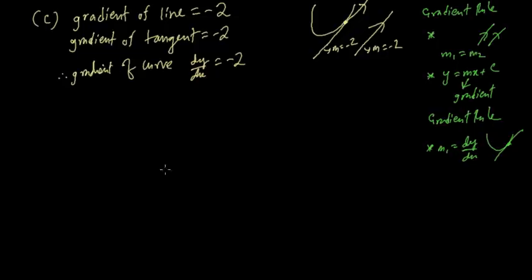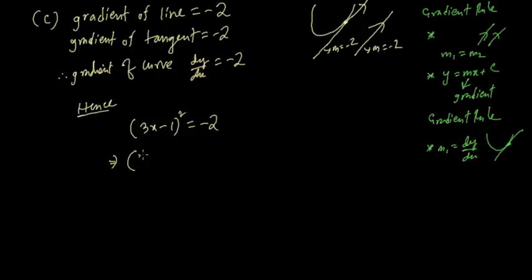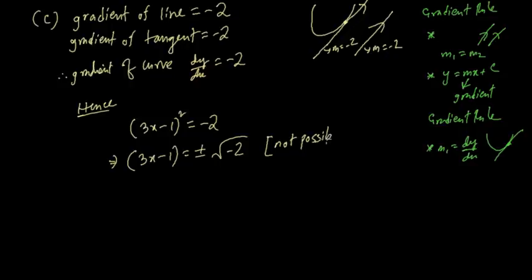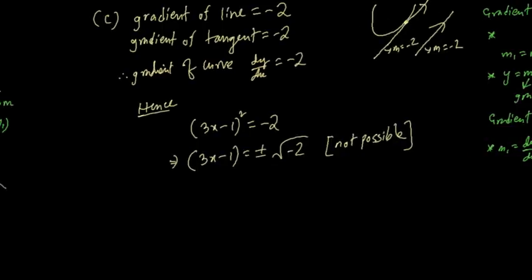Since dy/dx = (3x - 1)², setting this equal to -2: (3x - 1)² = -2. If you send the square to the other side, x would require ±√(-2), but we cannot take the square root of a negative number — this is not mathematically possible.